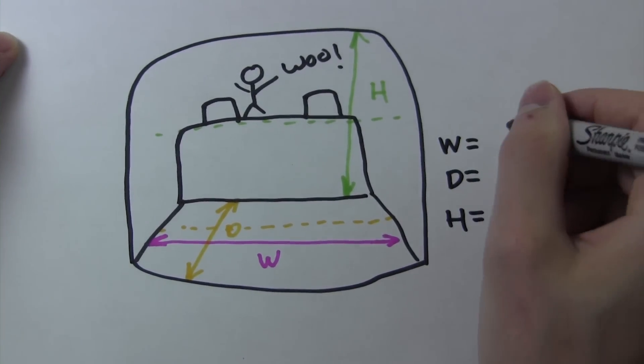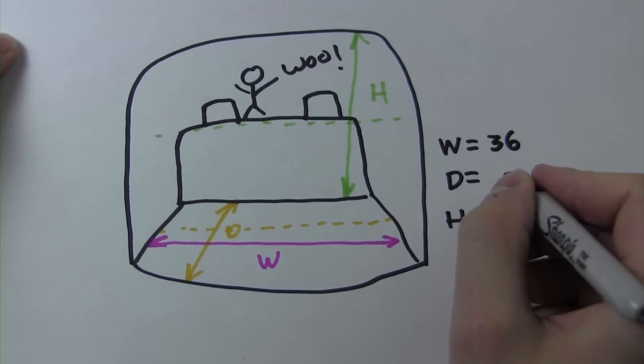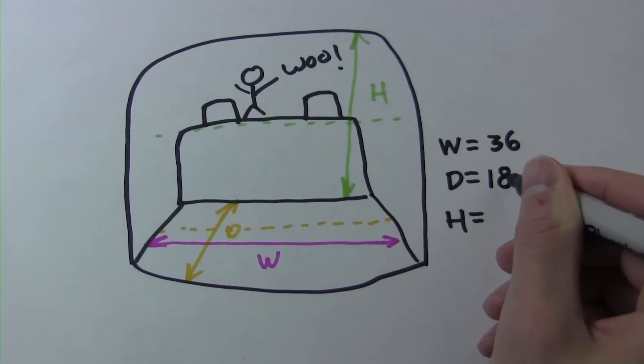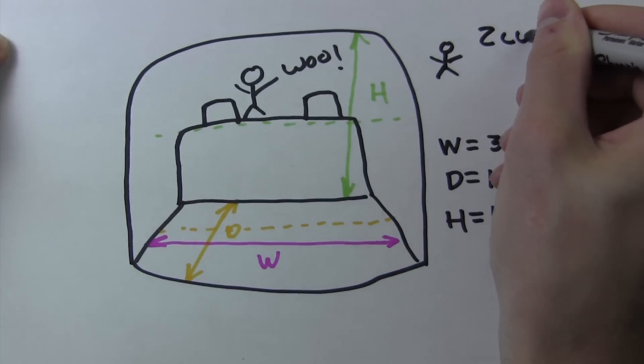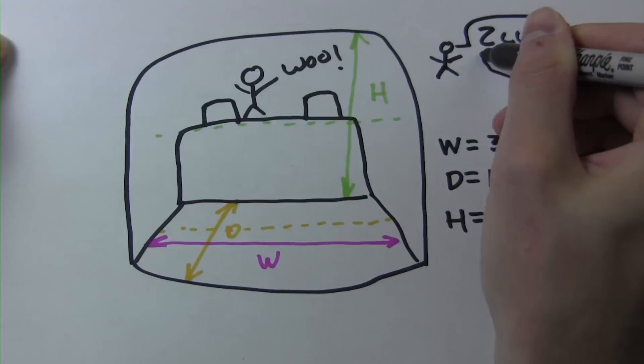For our first example, let's say that we measured a width of 36 inches, a depth of 18 inches, and a height of 15 inches. Now let's say that our box design has a requirement of being two cubic feet of air volume.